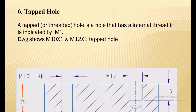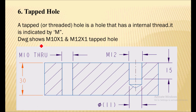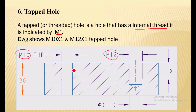Next is the tapped hole. A tapped hole is a threaded hole — it is a hole that has internal threads in it. It is indicated by the letter M. In the drawing you can see M10 by 1 and M12 by 1 tapped holes: one is a through tapped hole and the other is a blind tapped hole. In M10 by 1, 10 is the nominal diameter and 1 is the pitch of the thread.